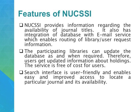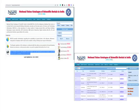The National Union Catalogue of Scientific Serials in India provides information regarding the availability of journal titles. It also has integration of its database with an email service, which enables routing of library user requests. Participating libraries can update the database as and when required, so users get updated information about holdings. The service is free of cost for users. The search interface is user-friendly and enables easy and improved access to locate a particular journal and its availability.